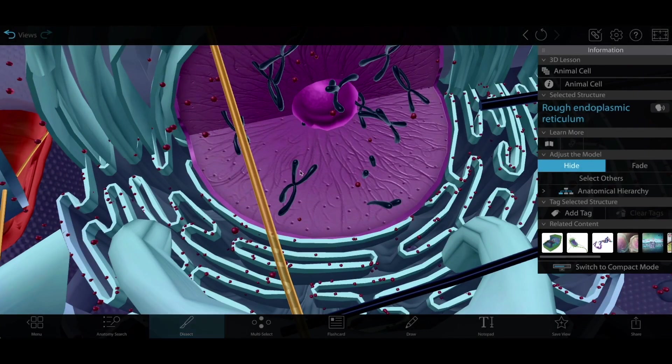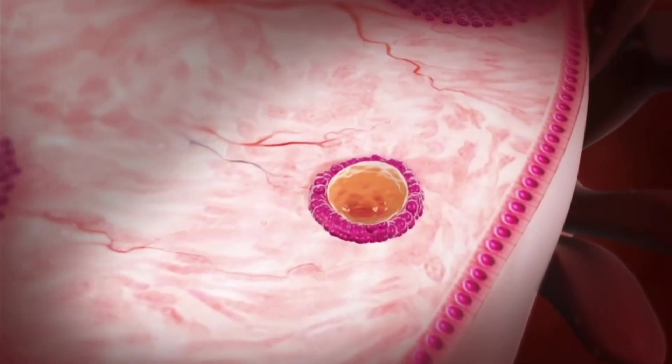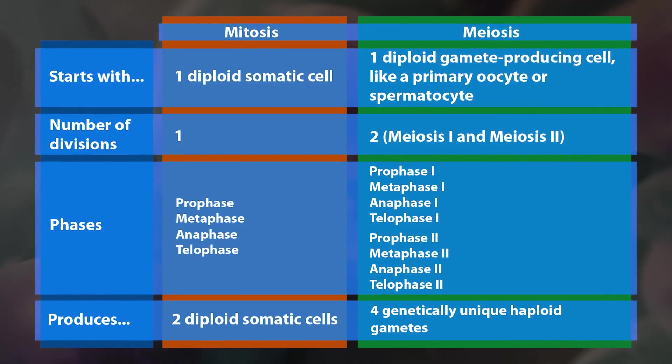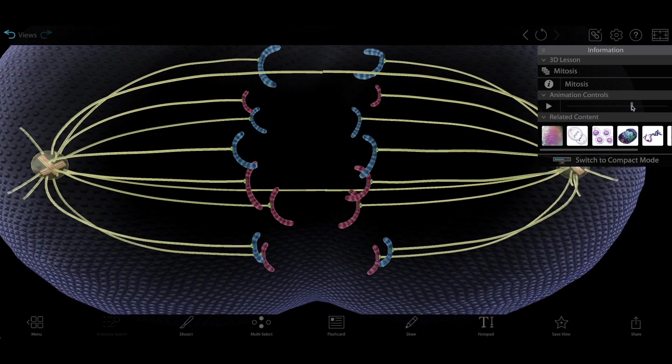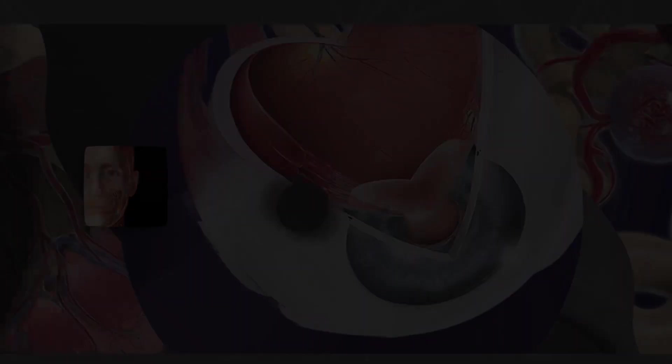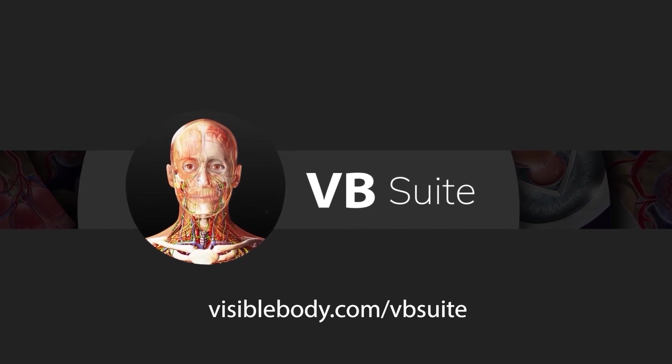And that wraps up our comparison. That was a lot of info we just threw at you, so we've organized it into a handy chart. Feel free to pause the video and take a screenshot here. To check out mitosis and meiosis in VB Suite for yourself, visit visiblebody.com/VBSuite.